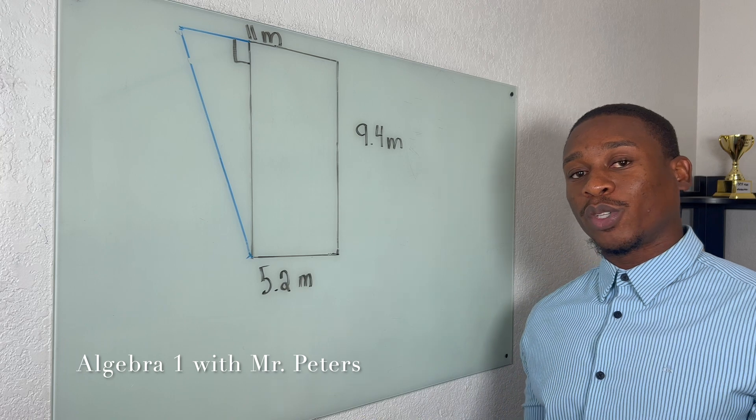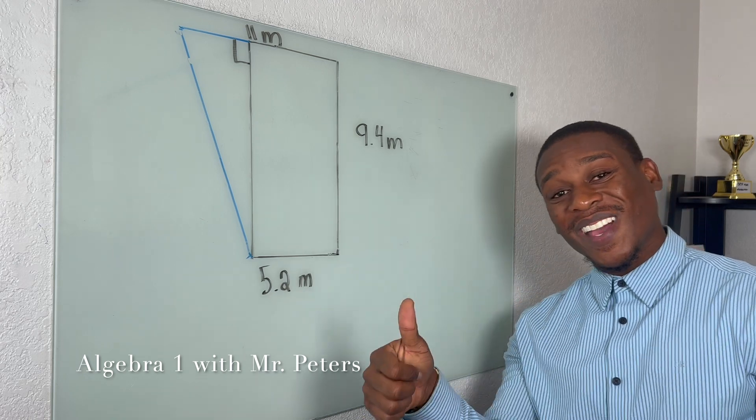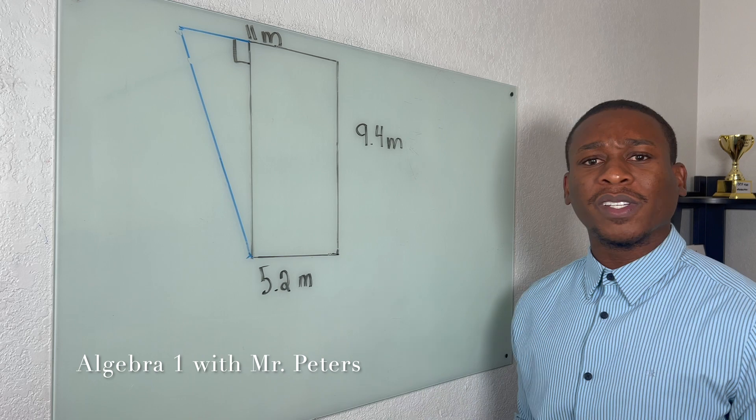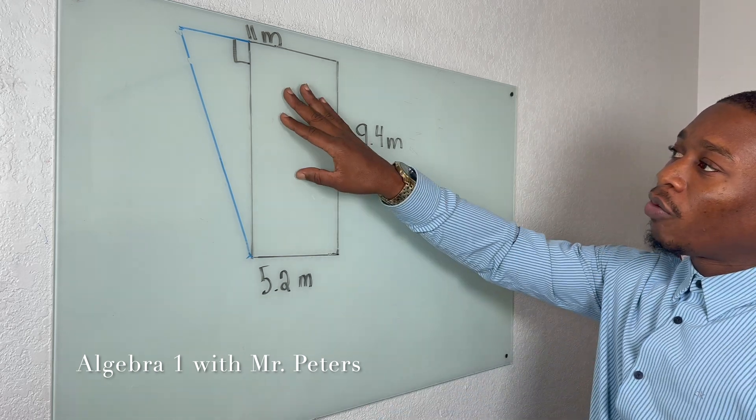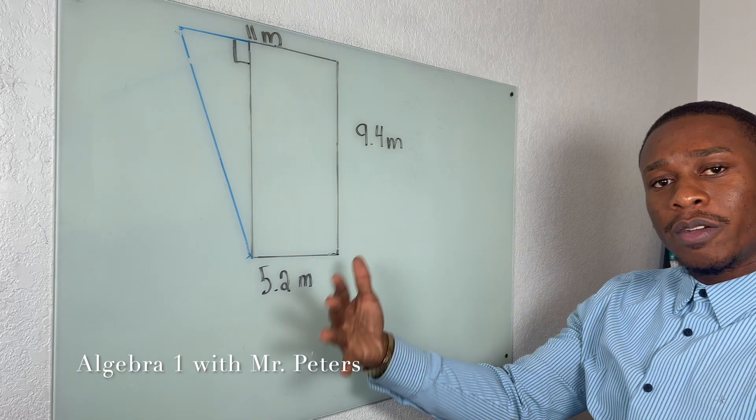So we're on to problem number two. And if you enjoyed this video so far, you can ask if you smash the like button for us. It really helps us to get this video out to more students. So our second problem, we have a rectangle with a triangle and we need to find the area.